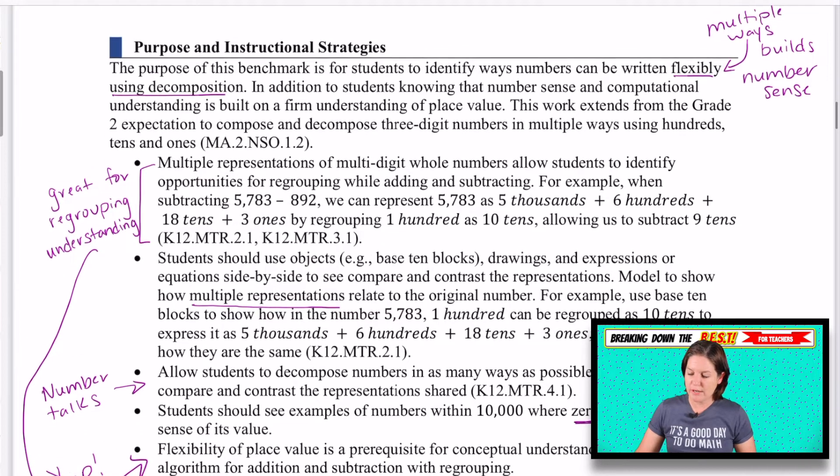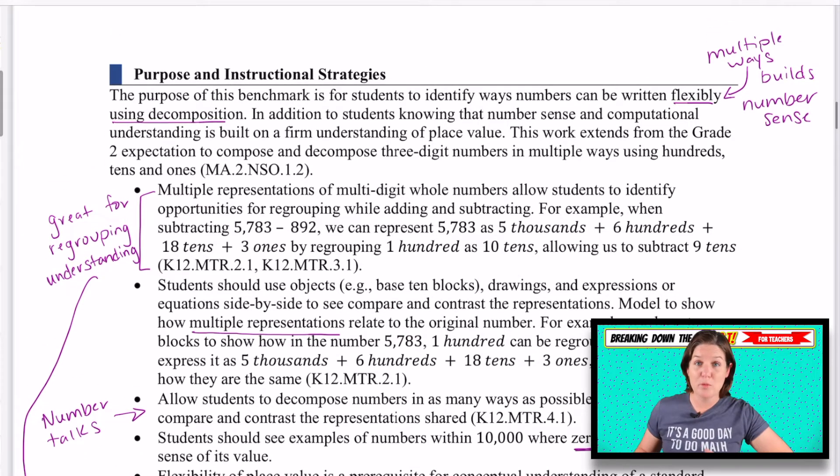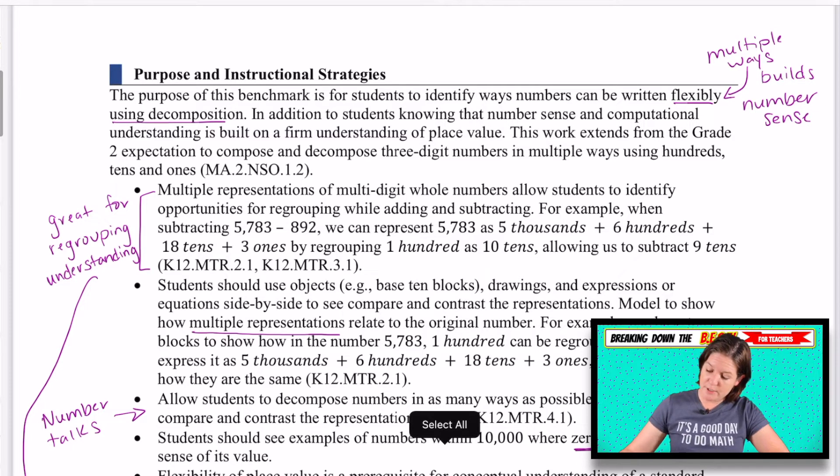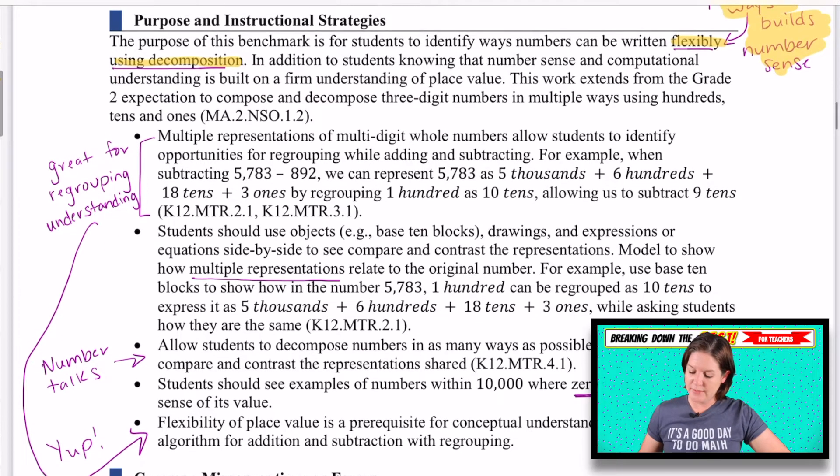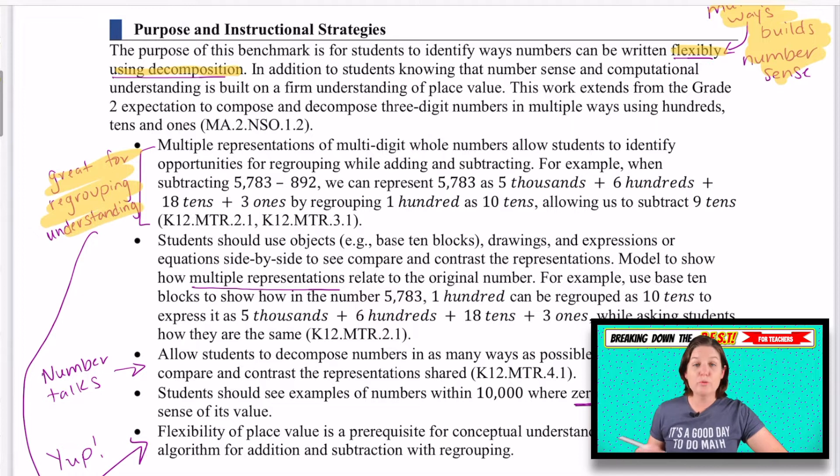Let's see purpose and instructional strategies. You can definitely read this, but I'll just take some time to point out some of the things that jumped out at me. It said that the purpose of this benchmark is to identify ways numbers can be written flexibly, multiple ways. This builds number sense. We're taking time to build this number sense up. I love it using decomposition. And I'm going to be honest with you. This standard is kind of tricky. I want you to take time, not only here, but as you continue moving forward into your other lessons, keep coming back. How else could we express this number? Right? It kind of goes with our standard before this, where we're reading and writing numbers using standard form, word form, expanded form, like continue to have these conversations. That's really going to help you.